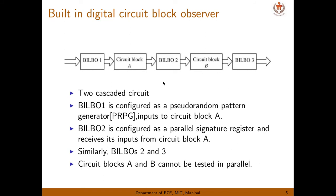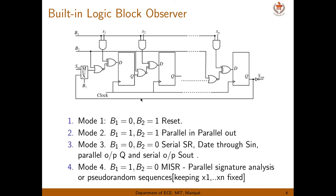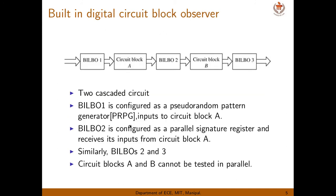The application of this block is called built-in digital circuit block observer, or BIDCO. We want to test circuit block A and circuit block B. We use three BILBO blocks: BILBO 1 is placed first, followed by circuit block A, then BILBO 2, then circuit block B, then BILBO 3. To test a circuit, we need a test vector generator and an output response analyzer.